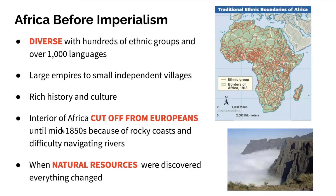The other thing that made Africa a little bit different than other continents at this period of time is the fact that it was essentially cut off until the mid-1850s. One of the main reasons for this was that geographically, Africa was very, very hard to navigate. The coasts of Africa were relatively flat, but then they would jut up to these high plateaus, which made it very difficult to travel. Many of the rivers in Africa had lots of waterfalls or cataracts along them, so a boat could not travel upstream the entire way.